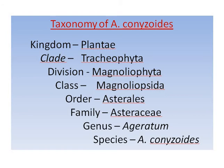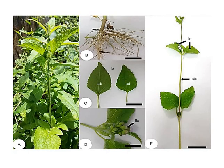Regarding the taxonomy of Ageratum conyzoides: it is placed under the kingdom Plantae, clade Tracheophyta, division Magnoliophyta, class Magnoliopsida, order Asterales, family Asteraceae, genus Ageratum, and the species is Ageratum conyzoides.